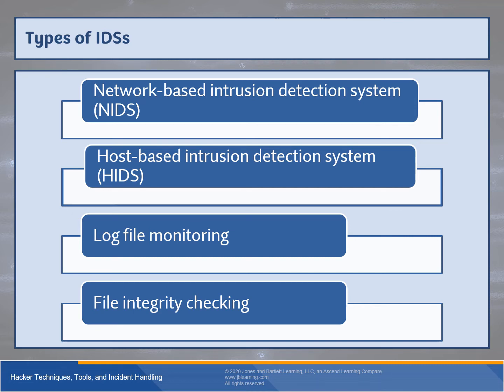Log file monitoring software analyzes logs for events including failed or successful logons, policy violations, file access, permission changes, privilege use, system setting alterations, and account creation or deletion. Change management dictates there should be a log chain showing who initiated a request, who reviewed and approved it, who executed it, and when the ticket was closed. Ticketing systems help distinguish false positives from true positives by providing explanations for anomalous-but-authorized activity.